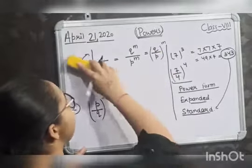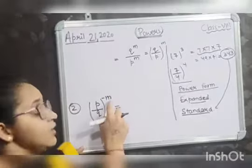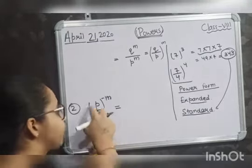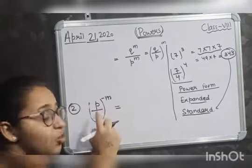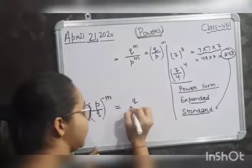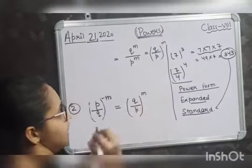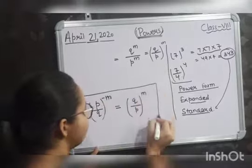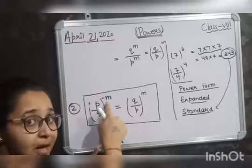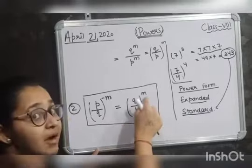In simple terms, if you have a number with a negative exponent and you want to convert it to a positive exponent, you just flip the base. The base P by Q, after flipping, gives you Q by P, and the power becomes positive. So the formula is: P by Q whole raised to the power minus m equals Q by P whole raised to the power m — flip the base and the power becomes positive.